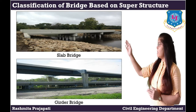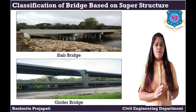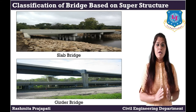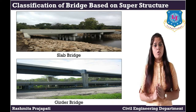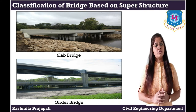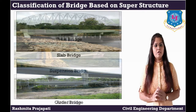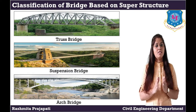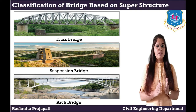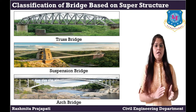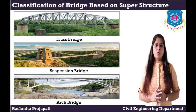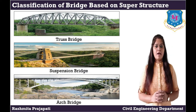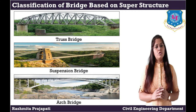Classification of bridge based on superstructure. Slab bridge: when the span of bridge is 3 to 6 metres, it is called a slab bridge. Girder bridge: when the span of bridge is more, the flooring is supported on RCC or steel girders; it is called a girder bridge. Suspension bridge: a suspension bridge consists of a cable hanging in a curve from which the road is supported. Arch bridge: in such type of bridge, the weight of the flooring is transferred to the piers through the arch.